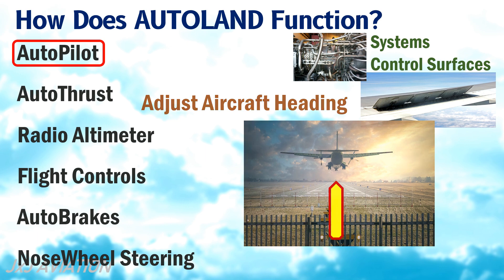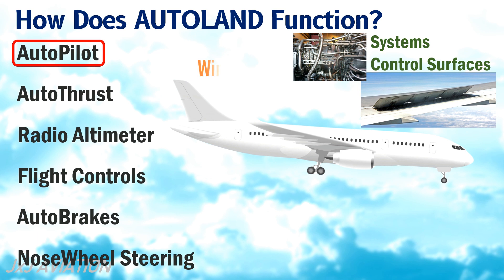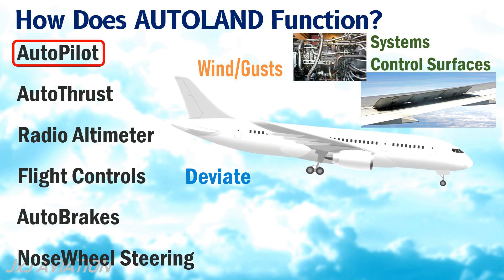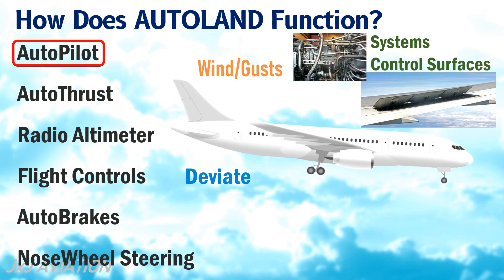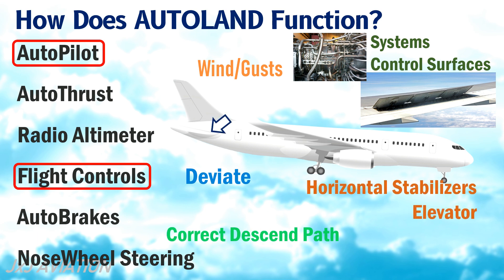In case of any winds or gusts, the aircraft may deviate from the correct flight path. The Autoland system and the Autopilot keep the aircraft in the correct descent path using different flight controls such as the horizontal stabilizer, the elevator, the rudder, and the ailerons.